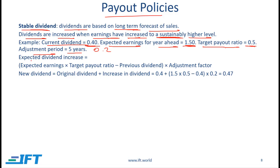In this situation the expected dividend increase is given by the formula shown here. We have the expected earnings times the target payout ratio. When we multiply these two we get the expected dividend for the upcoming year. In our example that is going to be 1.5 — the expected earnings — times the payout ratio, which is 0.5.